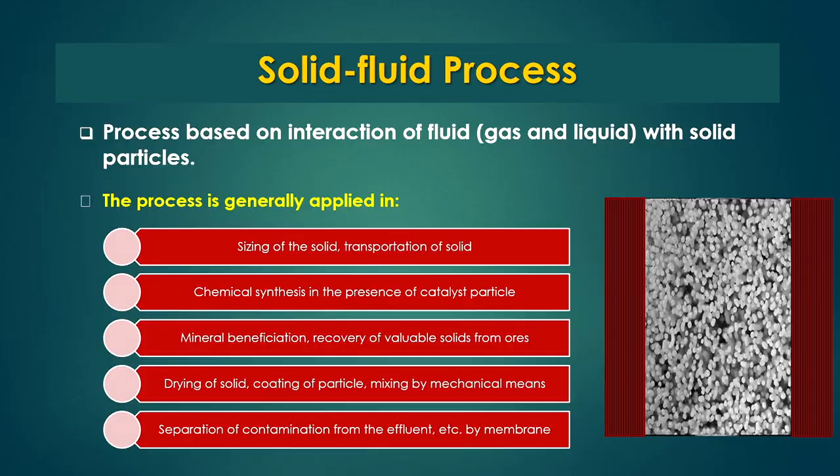You have to beneficiate ores or other materials to get the important or valuable minerals. You must process the resource materials or ores to recover those important minerals, and also separate or recover valuable solids from ores as well as from naturally occurring slurries. All these processes involve the interaction of solid and fluid.